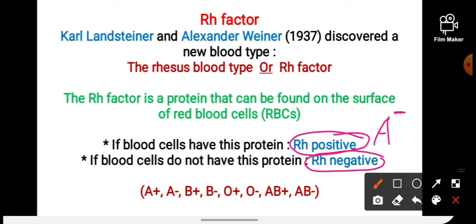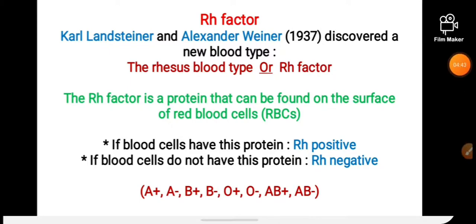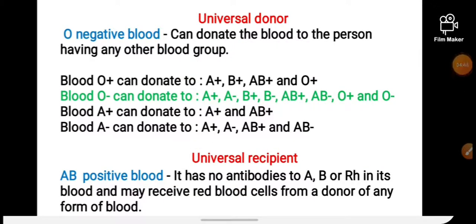Based on the RH factor, blood groups are of 8 types: A positive, A negative, B positive, B negative, O positive, O negative, AB positive, and AB negative.